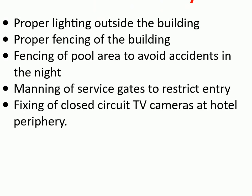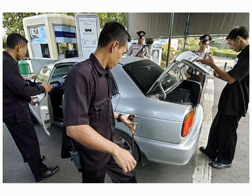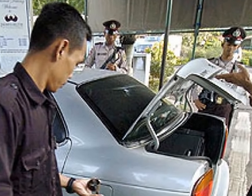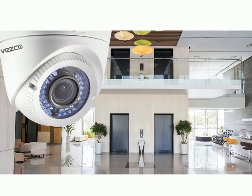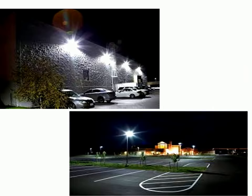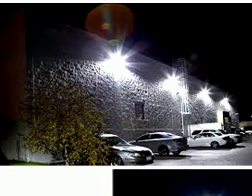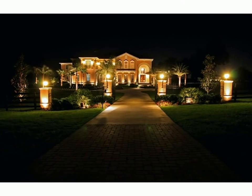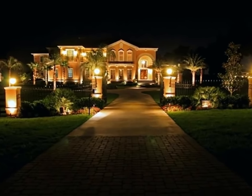External security includes proper lighting outside the building, proper fencing of the building, fencing of the pool area to avoid accidents at night, manning of service gates to restrict entry, and fixing of closed-circuit TV cameras at the hotel periphery. A security check of cars is performed. CCTV cameras are placed at the periphery. Lighting at the hotel's periphery or outer wall — a well-lit hotel does not allow criminals to hide around the hotel.